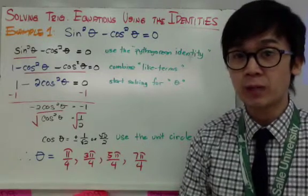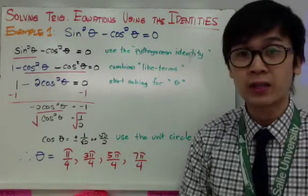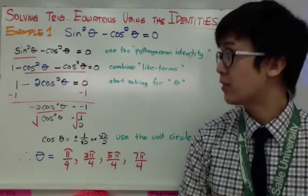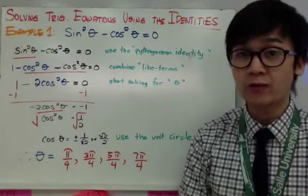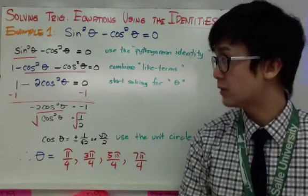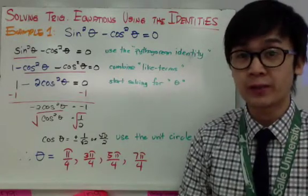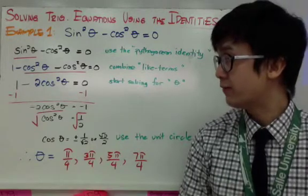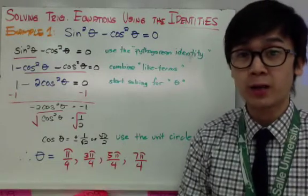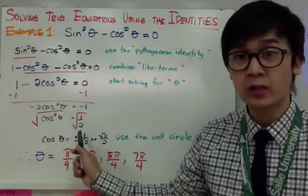I can now simplify by combining like terms — combining the cosine squared theta terms — so I have one minus two cosine squared theta equal to zero. The goal is to isolate cosine theta. I subtract one from both sides to get negative two cosine squared theta equals negative one, then divide both sides by negative two to get one half. Since cosine theta still has an exponent of two, I take the square root of both sides.